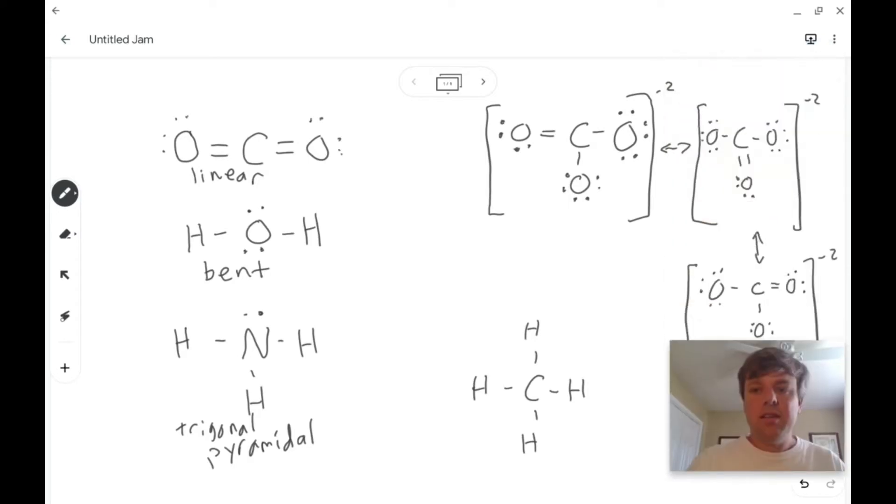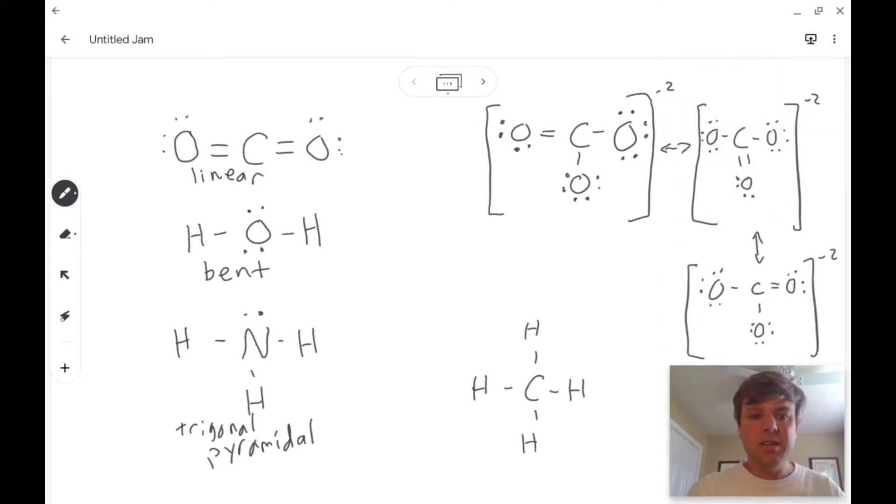If we look at the carbonate, CO3 with a negative two charge, it's got these three resonance structures, but either way you look at it, the carbon has three things attached to the carbon, and there are no unbonded pairs of electrons. The fact that there's a double bond in there doesn't make a difference. So if you have three things attached, they get as far apart from each other as possible in this case, and it is trigonal planar.